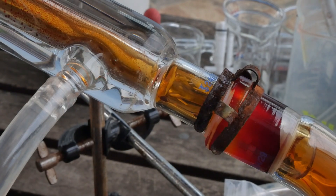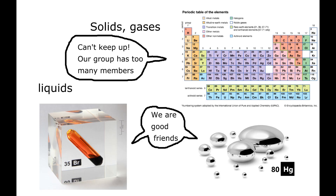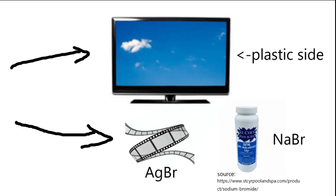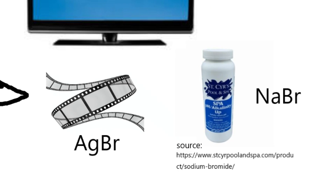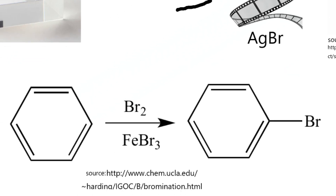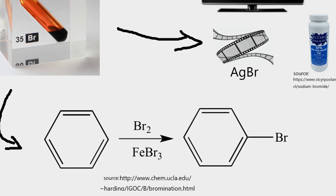It's special because it's one of only two elements that's a liquid at room temperature. It has lots of uses. In industry, bromine is commonly used as an additive in plastic products to make them less flammable. Its ionic compounds can also be found in films or pool tablets. In organic chemistry, it's used to brominate organic compounds, such as turning benzene into 1-bromobenzene.